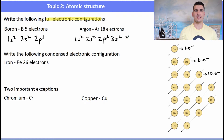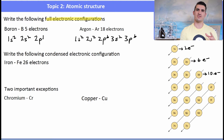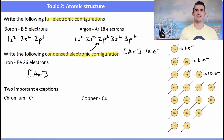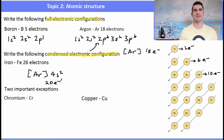The IB may ask for a condensed electronic configuration, where square brackets represent a noble gas. For iron, we use [Ar] to represent the 18 electrons of argon, then add 4s² for 20 electrons, and the remaining six electrons go into 3d⁶ — so iron is [Ar] 4s² 3d⁶.